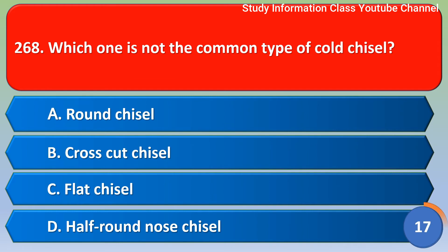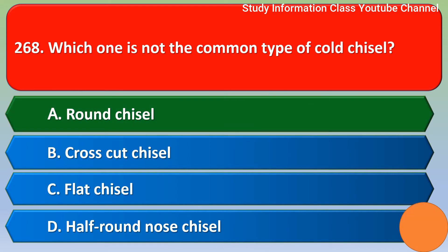Next question: which one is not the common type of cold chisel? Option A: round chisel, Option B: cross cut chisel, Option C: flat chisel, Option D: off-round nose chisel. The correct answer is Option A, round chisel.